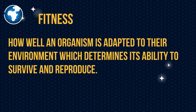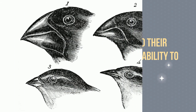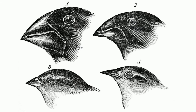Fitness: how well an organism is adapted to their environment, which determines its ability to survive and reproduce. This picture is a classic example. In fact, the finches are one of the things that got Charles Darwin thinking about evolution. The finches have different types of beaks based on the food where they're located, and the beaks either increased or decreased their fitness.